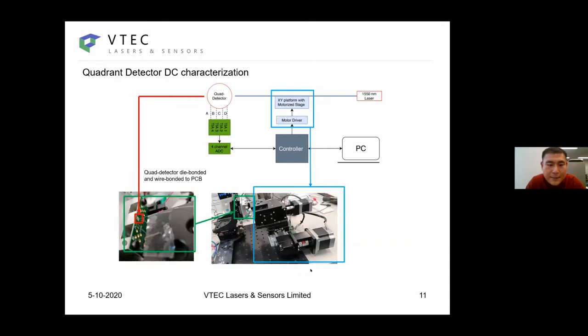This is the test bench that we have. On the left bottom, there is a core detector that has been die-bonded and wire-bonded to the PCB shown in the picture. On the left bottom side is a two-step motor that controls the movement of the fiber.